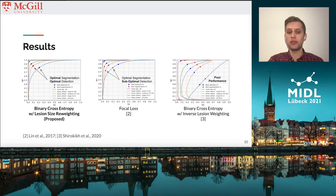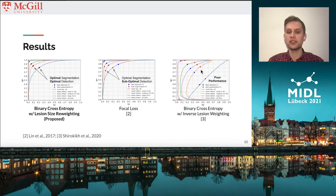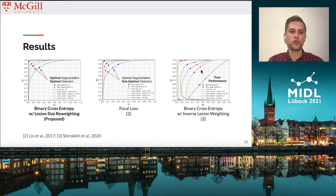Here we compare the proposed method, lesion size re-weighing, with focal loss and binary cross-entropy with inverse lesion weight. In the case of focal loss, the performance gap between the optimal segmentation and optimal detection operating points remains. In the case of binary cross-entropy with inverse lesion weighting, the distance between the optimal detection and segmentation operating points is even larger, and the method significantly underperforms all others. It should be noted that our experiments involve a much greater number of lesions spanning a much greater range of sizes than the original inverse lesion-weighing paper. Indeed, further analysis showed that inverse lesion weighing applied substantial weight to small lesions with voxel weights spanning several orders of magnitude, which is not a problem for the proposed lesion size re-weighing, with weights remaining within a reasonable range.